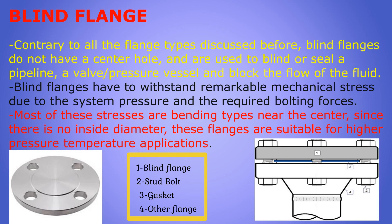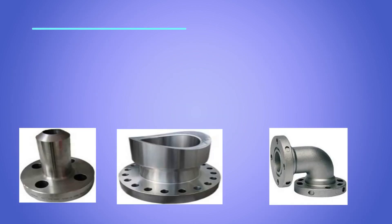In this picture, point number one is the blind flange, number two is the stud bolts, the blue element in between is the gasket, and the other end shows a weld neck flange connected with the pipe.